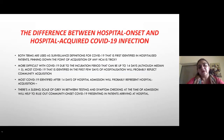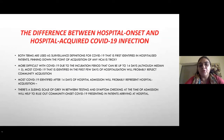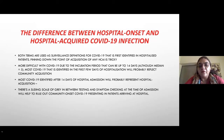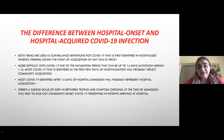How do we define hospital onset versus hospital-acquired COVID infection? These are two different terms. If a patient develops symptomatic COVID before five to seven days after admission, they likely acquired it from the community. If they have been admitted for a prolonged time and are diagnosed in the facility — typically after a five-day cut-off — then you must investigate whether they acquired it in the healthcare setting.